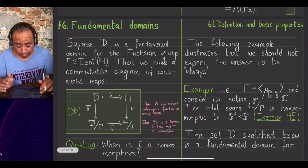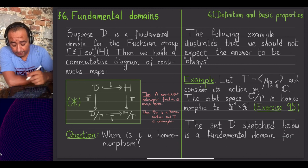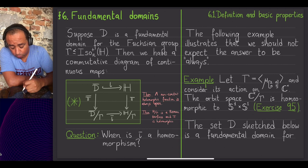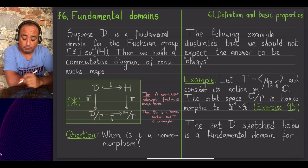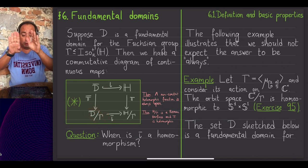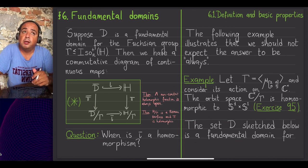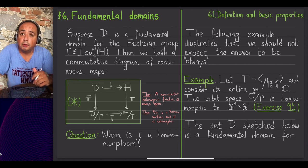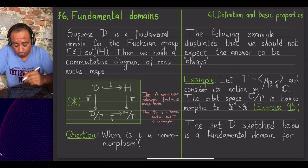Now recall that one of the reasons we are introducing the notion of fundamental domain is that we want to use them to give a simple way of computing the orbit space, by means of gluing — by taking a fundamental domain and gluing some sides of its topological closure, similar to what we did for obtaining a torus from a closed square by identifying opposite sides.